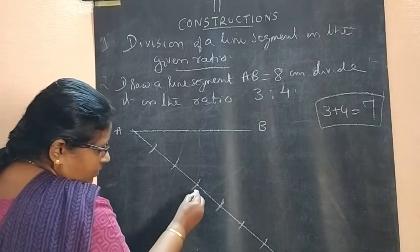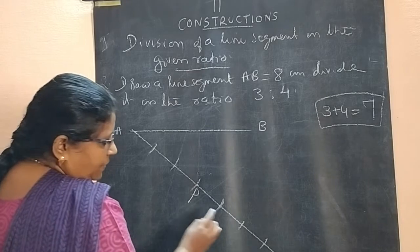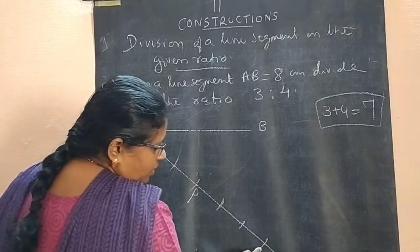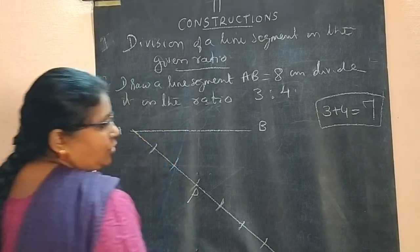1, 2, 3. Third part you mark as P. 1, 2, 3, 4. That part you mark as Q.